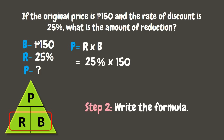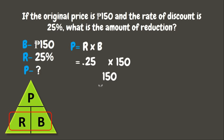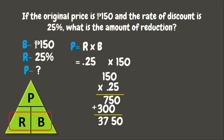Before we multiply, let us change the rate from percent into decimal. Change the percent sign into a decimal point, then move the decimal point two times to the left: 1, 2. This gives us 0.25. Now let's multiply 150 times 0.25. 5 times 150 is 750, while 2 times 150 is 300. Adding gives us 3,750. Since we have two decimal places, let's move the decimal point to the left two times. Our final answer is 37.50 pesos.